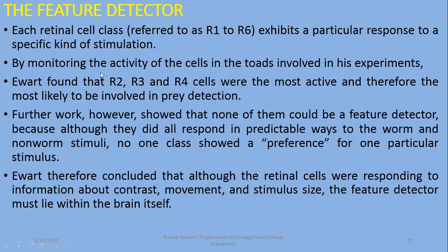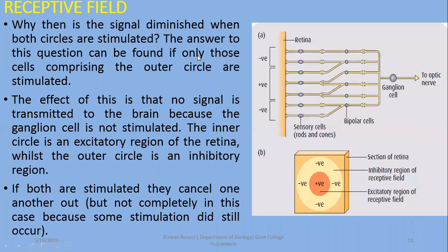By monitoring the activity of the cells involved in this experiment, Everett found that R2, R3, and R4 cells were the most active and therefore most likely to be involved in the pre-detection, among the 6 cells.